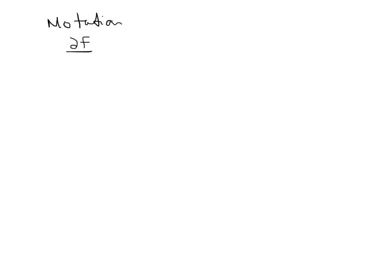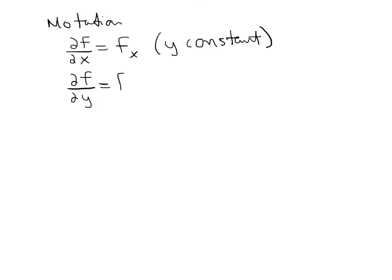There are a couple of different notations used. Del is used — that symbol is called del, not a D. So del-f over del-x is the partial of f with respect to x. We could also write this as f sub x, which is the notation I prefer as it's simpler to write. For the partial of f with respect to y, we write del-f over del-y or f sub y, and in that case we keep x constant.